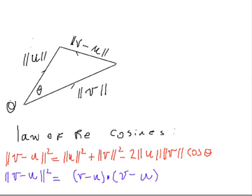And, of course, you are going to expand this. And when you expand this thing here, what you end up with is that this thing is equal to the norm of v squared minus 2 times u dot v plus the norm of u squared.